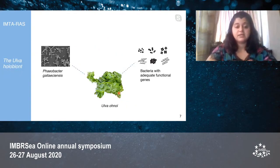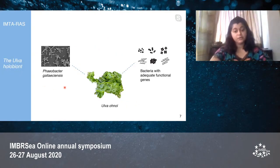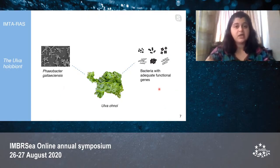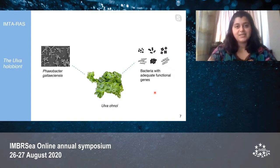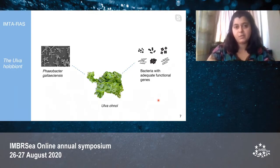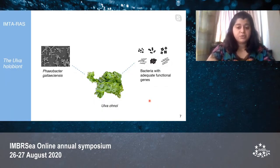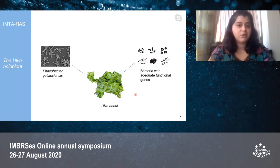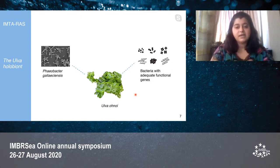However, Phaeobacter gallaeciensis is not the only bacteria able to colonize the surface of Ulva ohnoi — there are other bacteria that are able to do so as well. Usually bacteria that colonize Ulva ohnoi have functional genes that allow them to use algae metabolites as substrate for their own growth. At the same time, Ulva benefits from having bacteria on its surface because they are essential for its growth and development and also protect it from pathogens in the environment. This symbiotic relationship between Ulva and bacteria leads to the concept of the Ulva holobiome. There are many parameters that affect the assembly of these bacteria on Ulva ohnoi; however, light is a less studied factor.